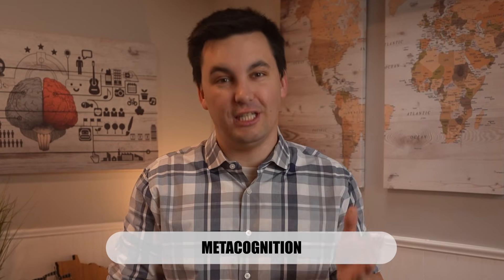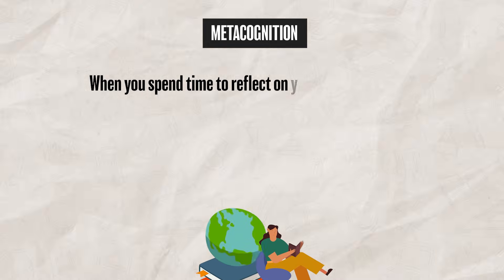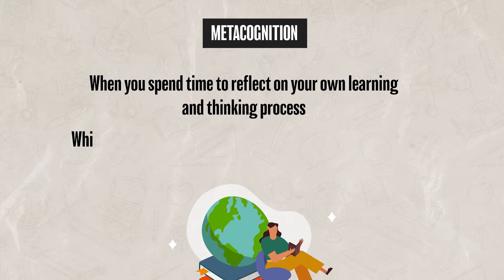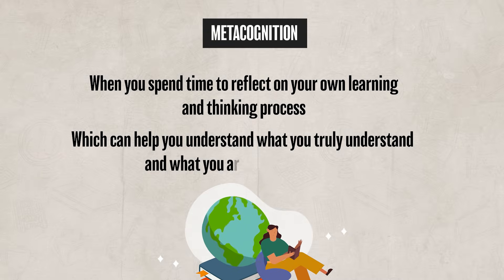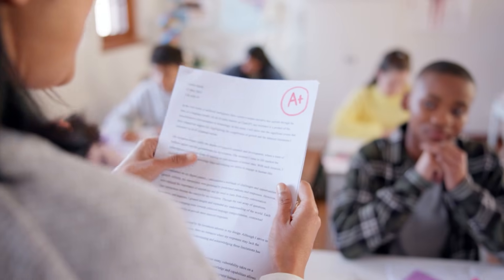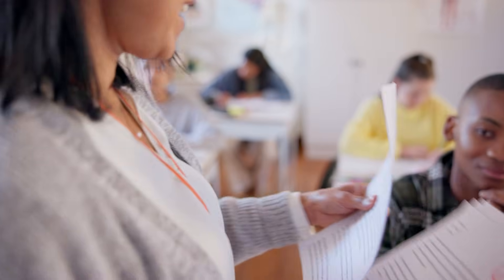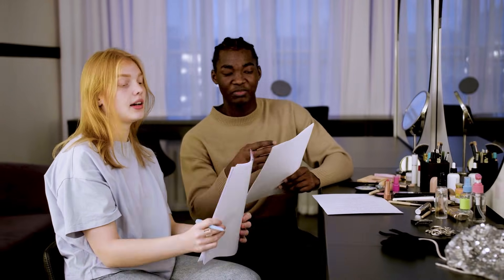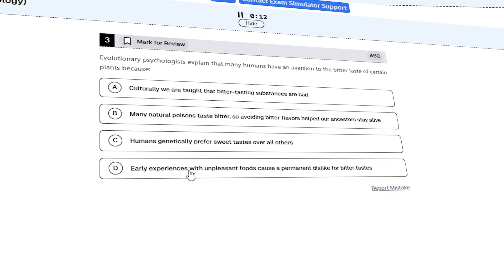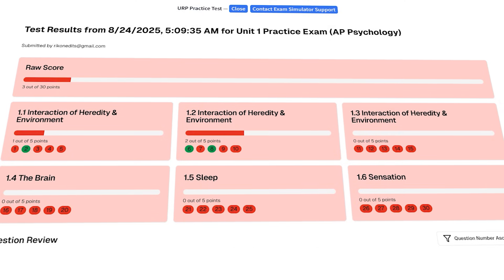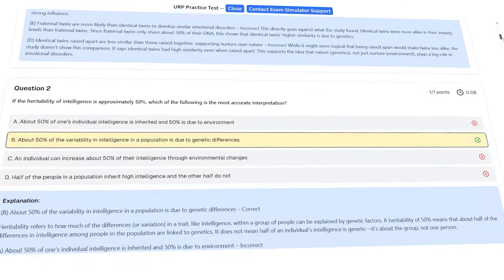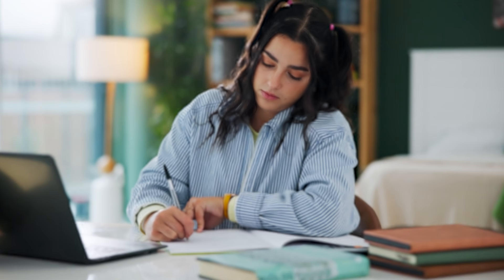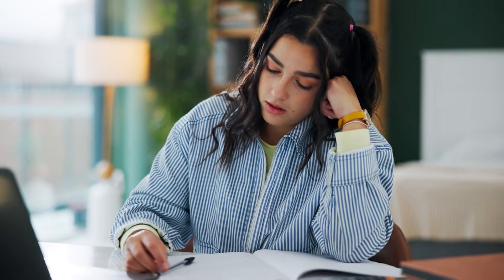One of the last ways to help improve your memory retrieval is by practicing metacognition, which is when you spend time to reflect on your own learning and thinking process — giving you insight into what you truly understand and what you are struggling with. For example, after you take a test, you should spend some time reflecting on how you studied and prepared. You should also take some time to look over the test results with your teacher, or review the breakdown of your exam in my ultimate exam slayer. This will allow you to see if you keep missing certain questions or topics, helping you identify your strengths and weaknesses to improve your studies in the future.